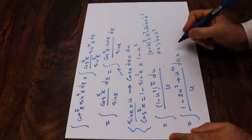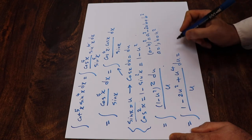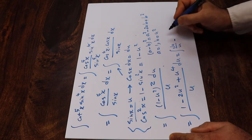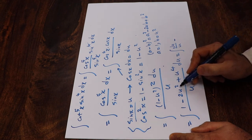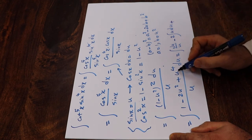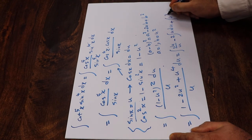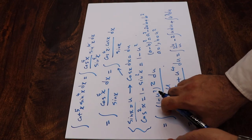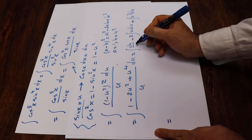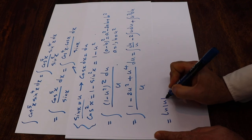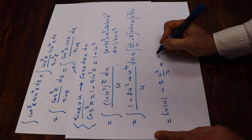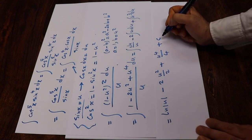You can split this integral into three parts: the integral of du over u, minus 2 times the integral of u du (since u²/u = u, and 2 is a constant pulled out), plus the integral of u³ du (since u⁴/u = u³). These are straightforward: the integral of du/u is ln u, minus 2 times u²/2, plus u⁴/4, plus C.